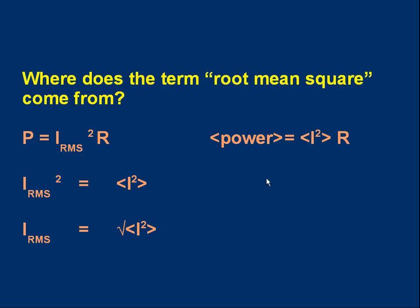Let's briefly explain where the term 'root mean square' comes from. We know the average power is I_rms² × R. Another way of writing that uses angle brackets to mean 'average value', so the average value of power equals the average value of I² times R.